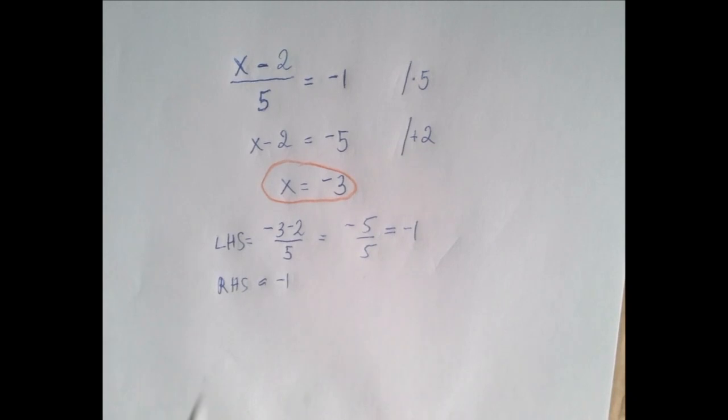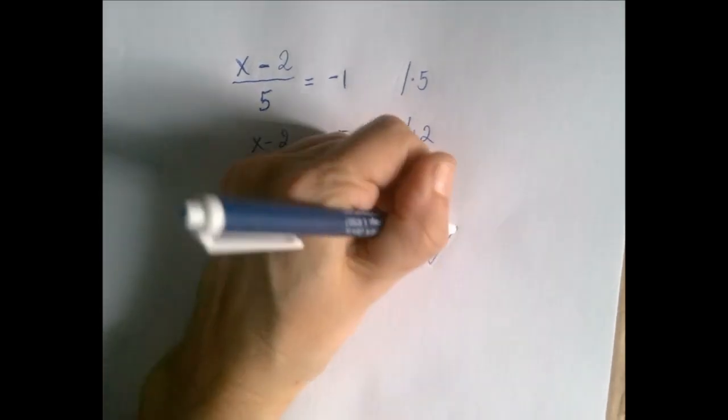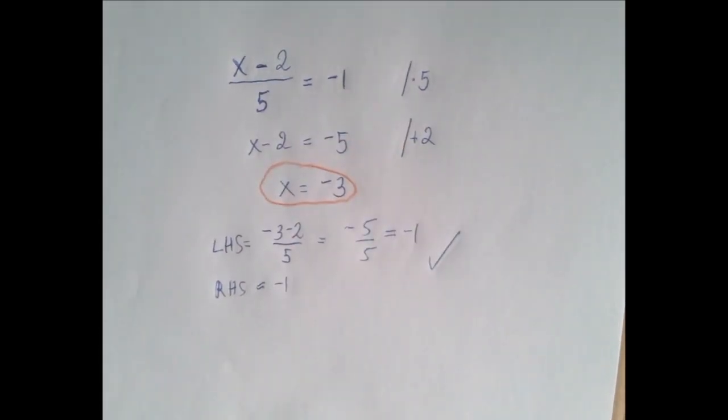So if we substitute x equals negative 3 into the equation, the left-hand side and the right-hand side are equal to each other, which means that indeed negative 3 is a solution of the equation. Thank you for watching.